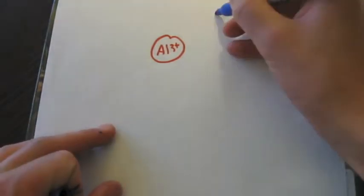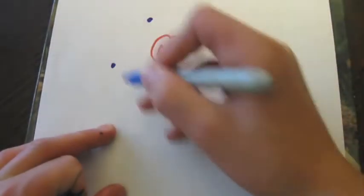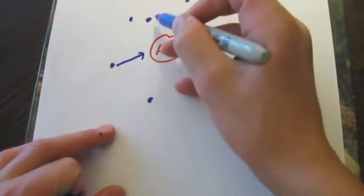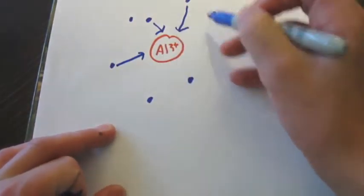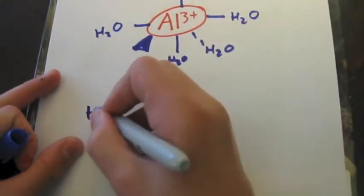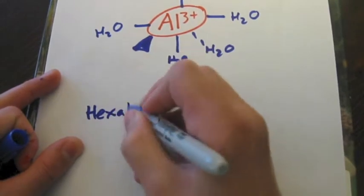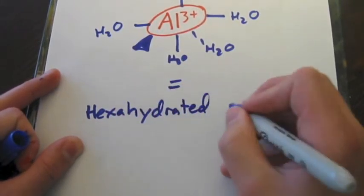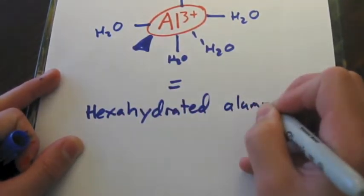Water molecules, because of their polar nature, are attracted to ions with high charge density and surround them, forming what are called ligands. The ions, now surrounded by water molecules, are referred to as hydrated ions.